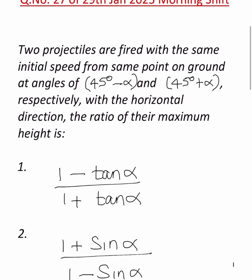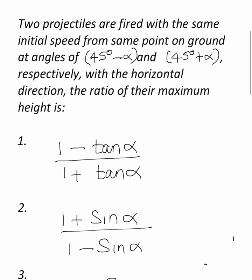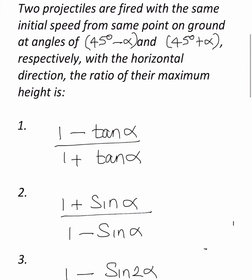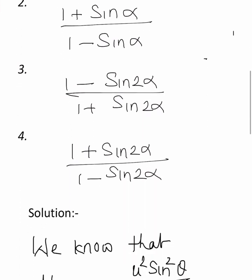Two projectiles are fired with the same initial speed from same point on ground at angles of 45 minus alpha and 45 plus alpha, respectively, with the horizontal direction. The ratio of their maximum height is, and they have given four options we need to find the correct answer.